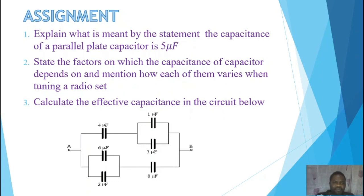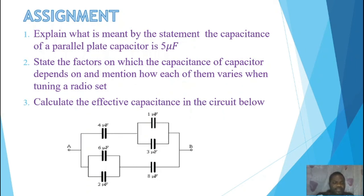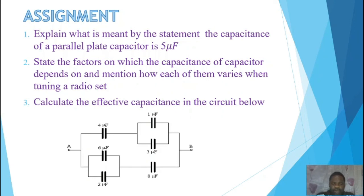Assignments: Number 1 — Explain what is meant by the statement 'the capacitance of a parallel plate capacitor is 5 µF.' Number 2 — State the factors on which the capacitance of a capacitor depends, and mention how each varies when tuning a radio set. Number 3 — Calculate the effective capacitance of the circuit shown. Submit your answers in Google Classroom. Thank you for listening, and God bless you.